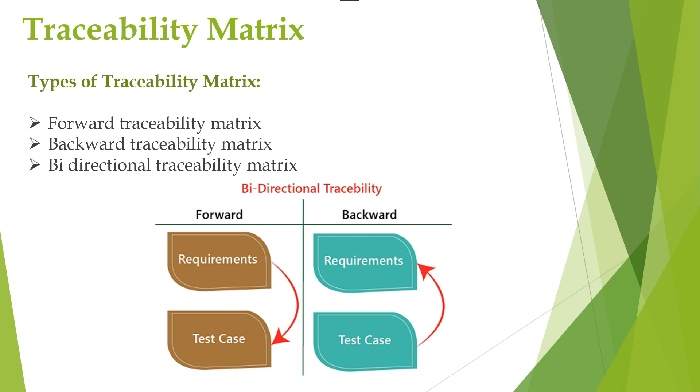We will see backward traceability matrix or the reverse traceability matrix. It is used to ensure whether the current project remains on the right track or not. The main purpose behind this traceability matrix is to verify whether we are not expanding the scope of the project by adding extra code or design or test cases which is not specified in the requirement. It has mapping between test cases to requirements.